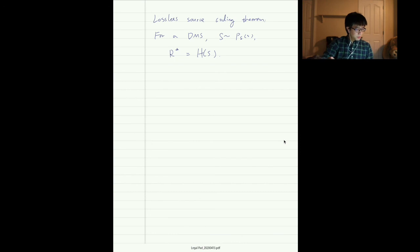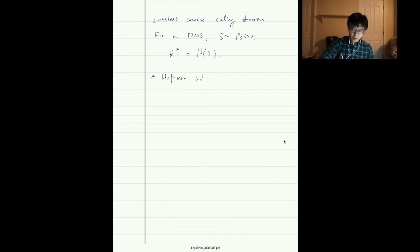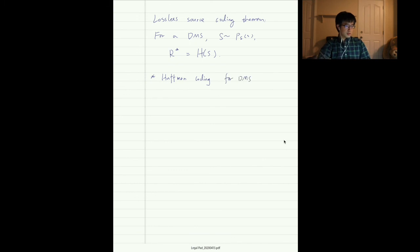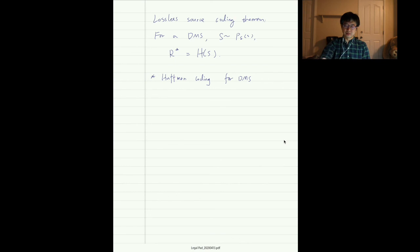Our time is almost up, so let me get started on Huffman coding. Huffman coding is a coding method for DMS. The best way to illustrate Huffman coding is via an example. Let's consider a source with three symbols: S_0, S_1, S_2, each with probability 1/3.